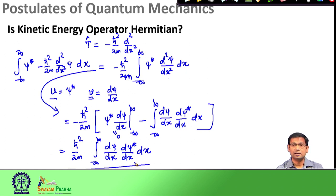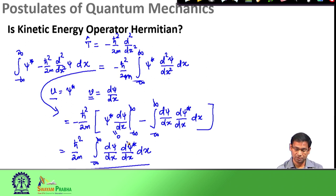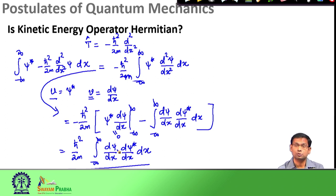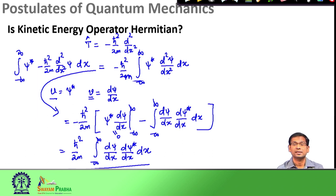This is still not the final form of the expression required to show the kinetic energy operator is a Hermitian operator. I would leave this derivation here with a request for you to continue and show the right-hand side of the Hermitian relation. Everything needed to do this derivation we have already discussed, so it would not be difficult for you to continue, and at the end you should be able to show that the kinetic energy operator is also a Hermitian operator.